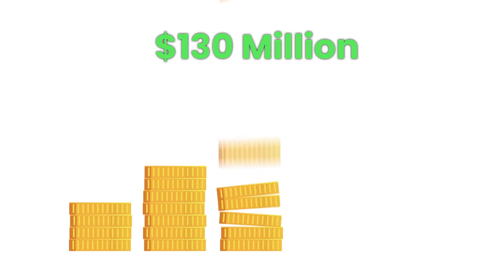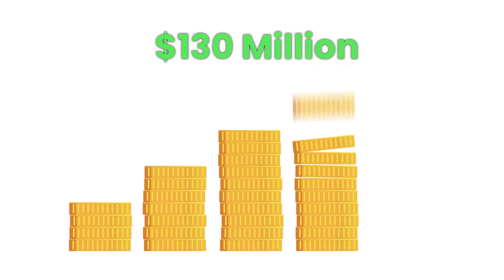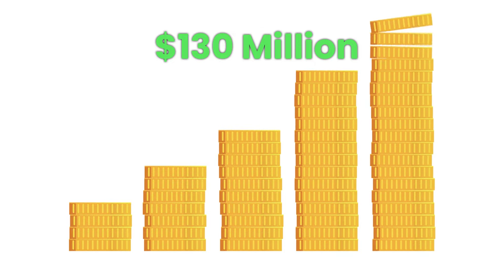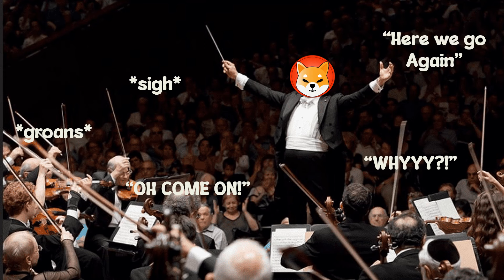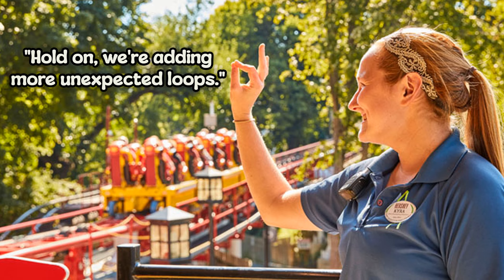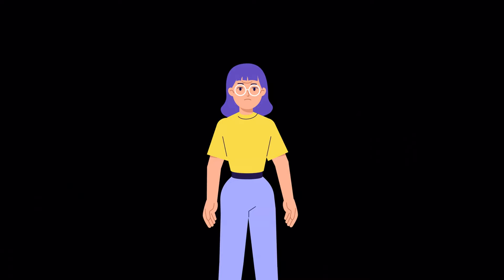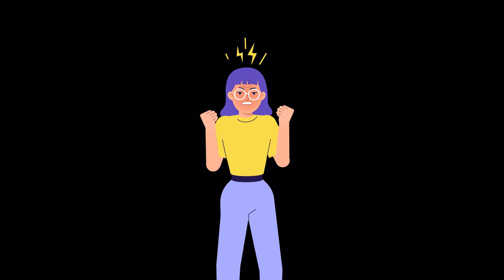And then, just when the optimism was settling in, news broke that the U.S. government plans to sell a whopping $130 million worth of cryptocurrency. Cue the collective groan from the Shiba Inu community. It felt like being on that roller coaster, finally enjoying the ride, only to hear, hold on, we're adding more unexpected loops. This announcement injected a fresh wave of frustration.